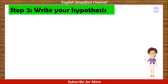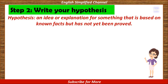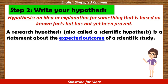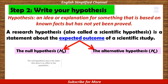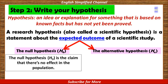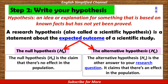Now let's continue to Step 2: Write your hypothesis. A hypothesis is an idea or explanation for something that is based on known facts but has not yet been proved. A research hypothesis, also called a scientific hypothesis, is a statement about the expected outcome of a scientific study. In experimental research there are at least two expected outcomes: the null hypothesis (H0) and the alternative hypothesis (HA). The null hypothesis claims there is no effect in the population, while the alternative hypothesis claims there is an effect in the population.